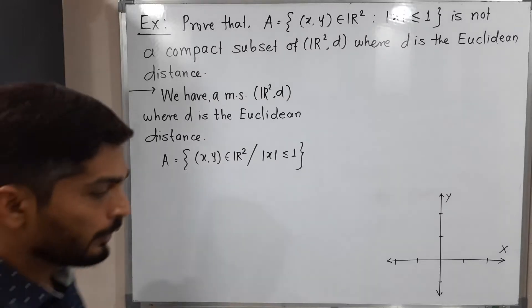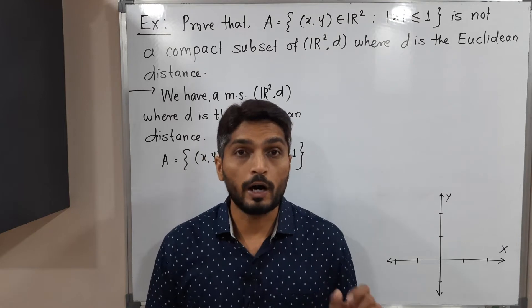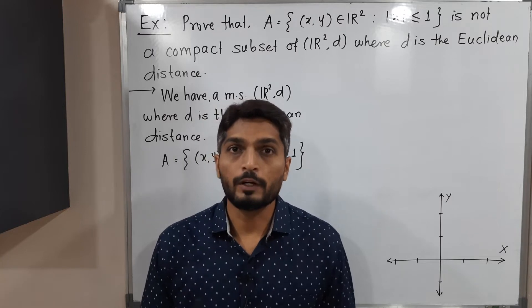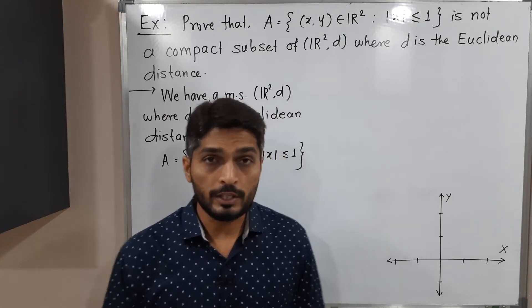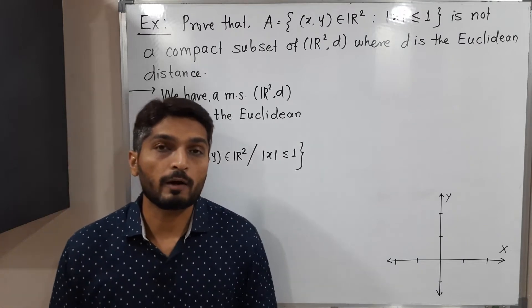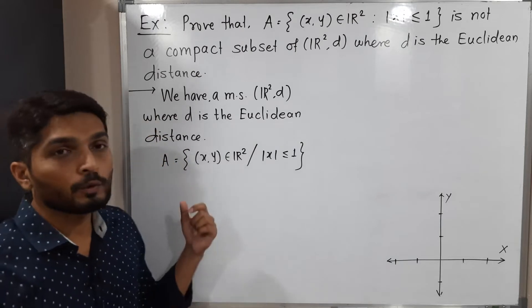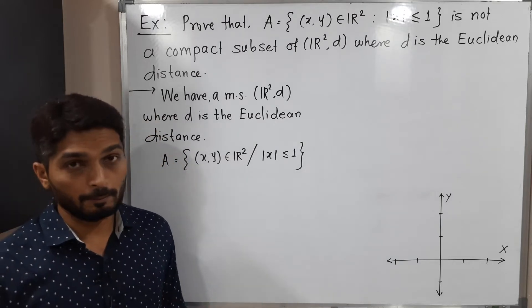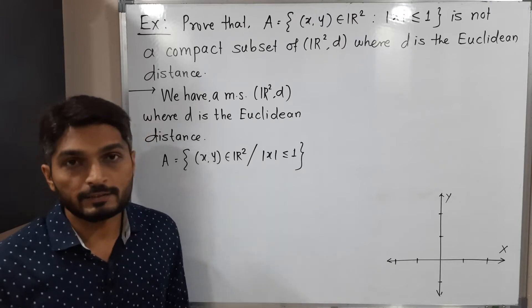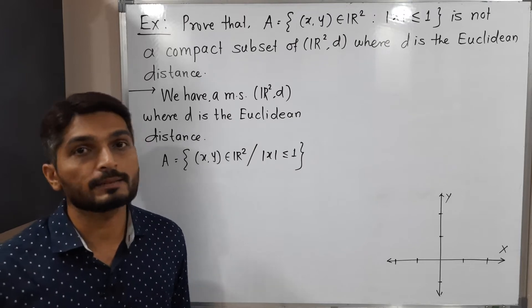In this video we are going to discuss set A, which is a subset of ℝ² with Euclidean distance d. We have to prove that A is not a compact subset of ℝ²(d). The given information is: our metric space is ℝ²(d) where d is the Euclidean distance, and set A is a collection of points in ℝ² satisfying a given condition.